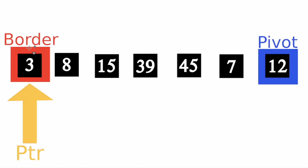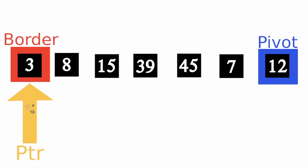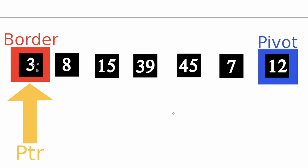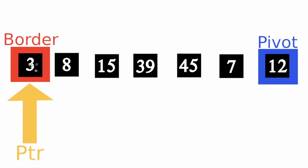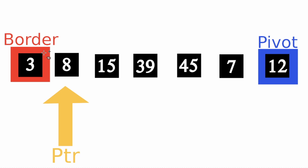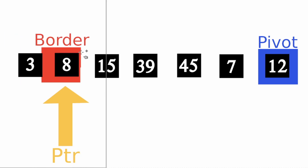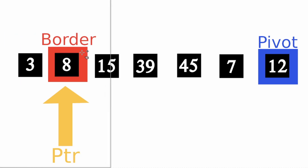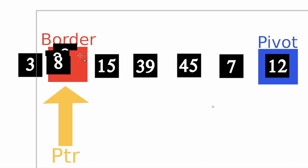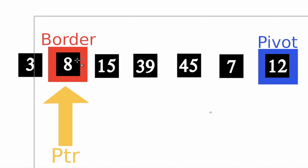That is very important — not including the border itself. Then we just ask: is 3 less than the pivot point, which is 12? If that is true, I want to swap 3 and the current border value, which is just 3 as well. Then I want to increase the pointer to the next element and the border to the next element. Again I ask: is 8 less than 12? If that is true, we swap 8 with 8 again, which doesn't make sense visually.